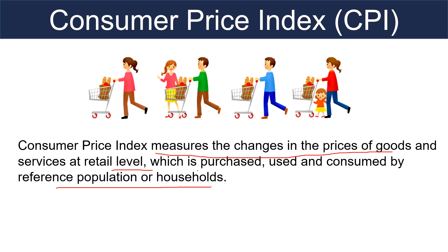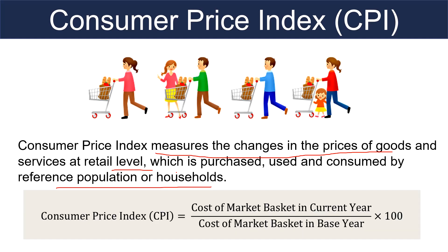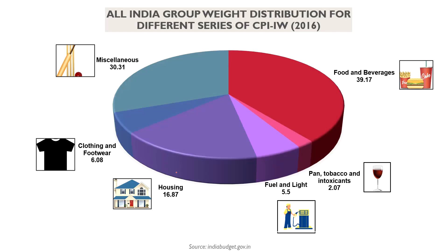At present, this index is now being prepared with base year 2012, i.e. 100. Further, if you want to know how much the price of a particular commodity has increased over time, you can use this formula to calculate the change. Now we will look into the group wise weight distribution for different series of consumer price index for industrial workers.